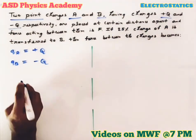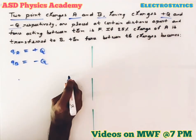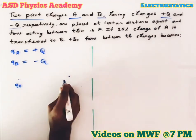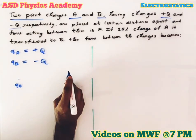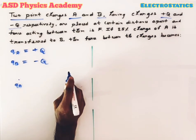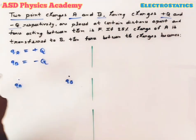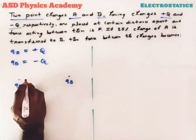This B is here -q. Now these two point charges qa and qb are placed in vacuum. If no medium is given, we will always take vacuum or free space. So now these two point charges are separated by distance d.